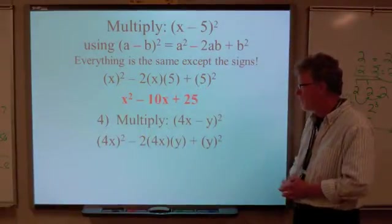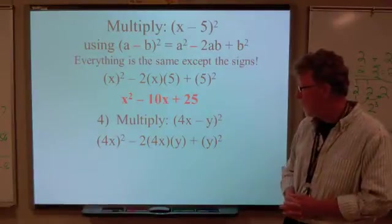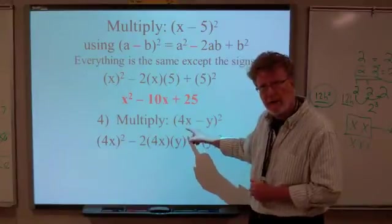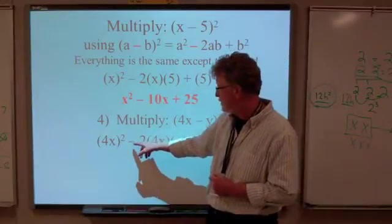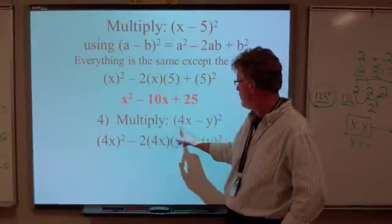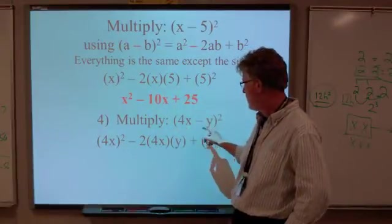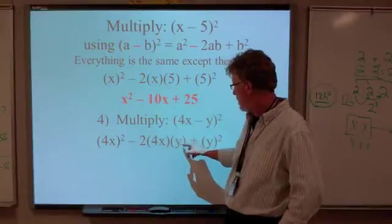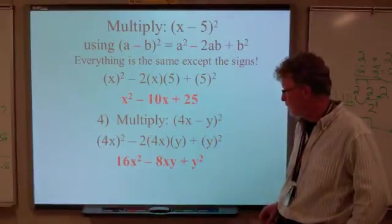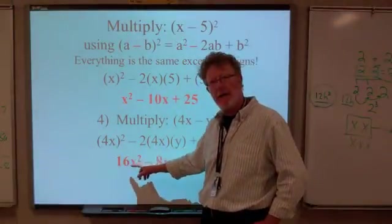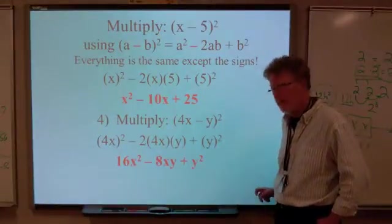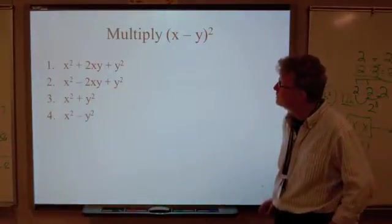Now let's try this one out: (4x - y)². We end up with (4x)² because 4x is our a. We have the negative sign from here, we have our 2 from here, we have our a which is 4x, and we have our b which is y. All of that's there, and then we have our y². We're going to simplify and we end up with 16x² - 8xy + y².